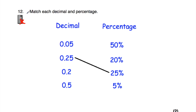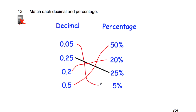Question number twelve says match each decimal and percentage. We need to match up equivalent decimals and percentages: 25% is 0.25, and we know a quarter is 0.25. 50% is a half, and a half is 0.5. 20% is 0.2. And 0.05 is 5%. So: 0.05 is 5%, 0.25 is 25%, 0.2 is 20%, and 0.5 is 50%.